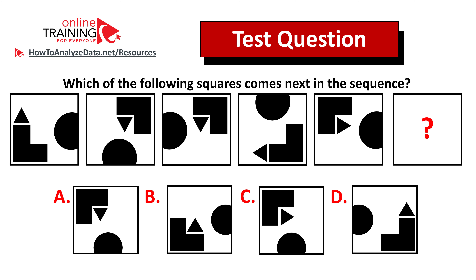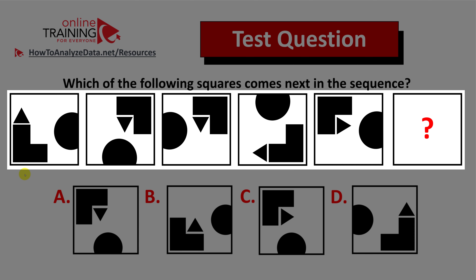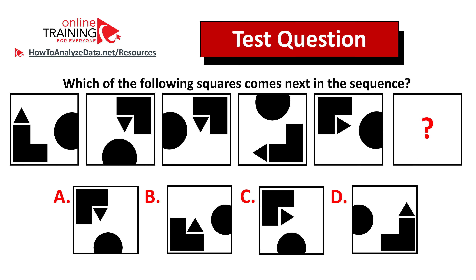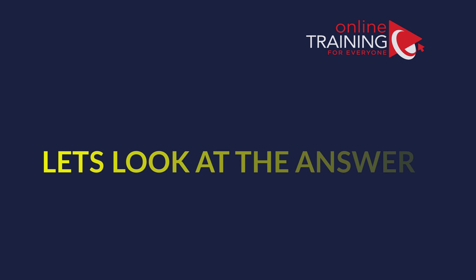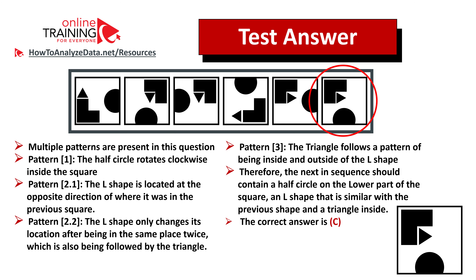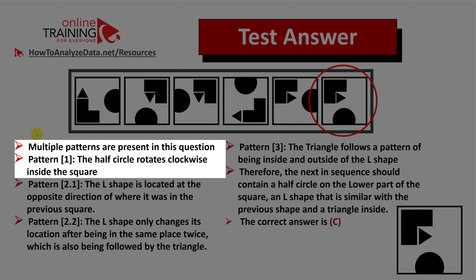Let me share with you a tricky question which tests your pattern recognition and analytical skills. Which of the following squares comes next in the sequence? You're presented with a sequence of five squares and the fifth square is missing. There are four different choices: A, B, C, and D. Do you recognize the pattern? Give yourself 10 to 15 seconds to look closely and see which shape should be selected from the four choices. Did you figure out the solution? Let's get the correct answer together.